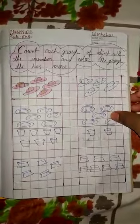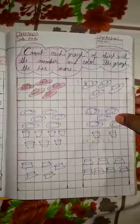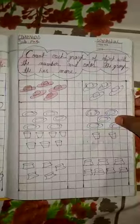Hello kids, how are you? I hope all of you are well and fine. Today we are going to learn in maths: count each group of objects with a number and color the group that has more. So this line may have group of objects, pictures, okay?